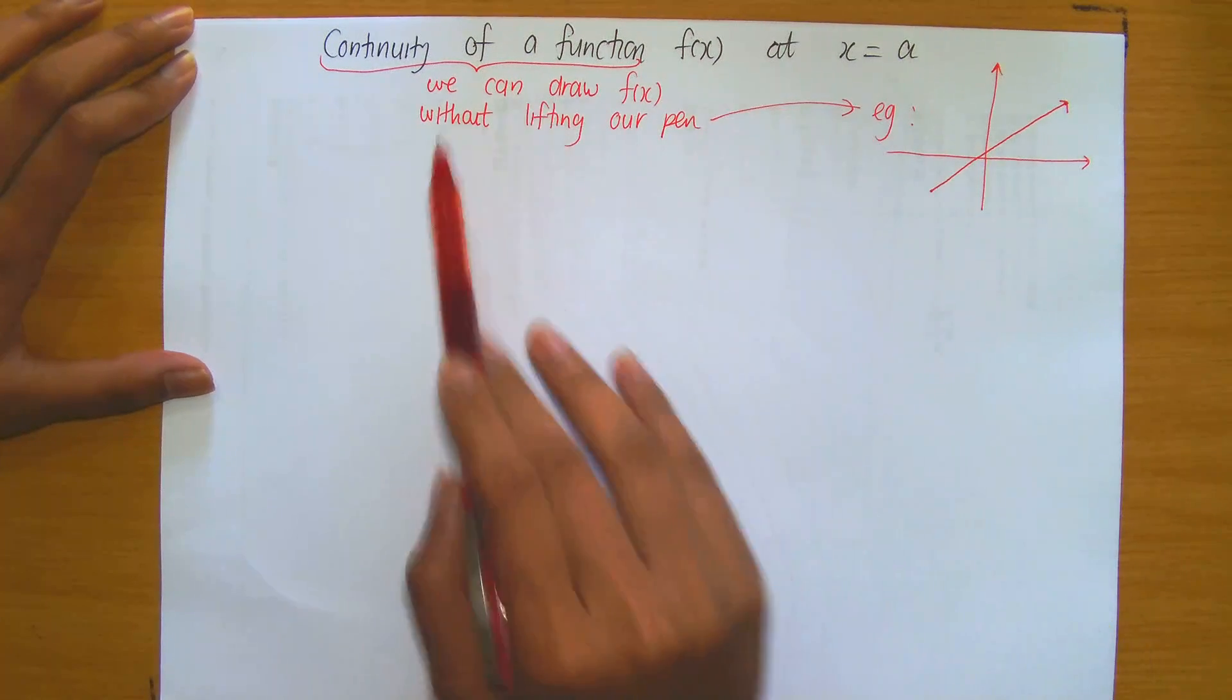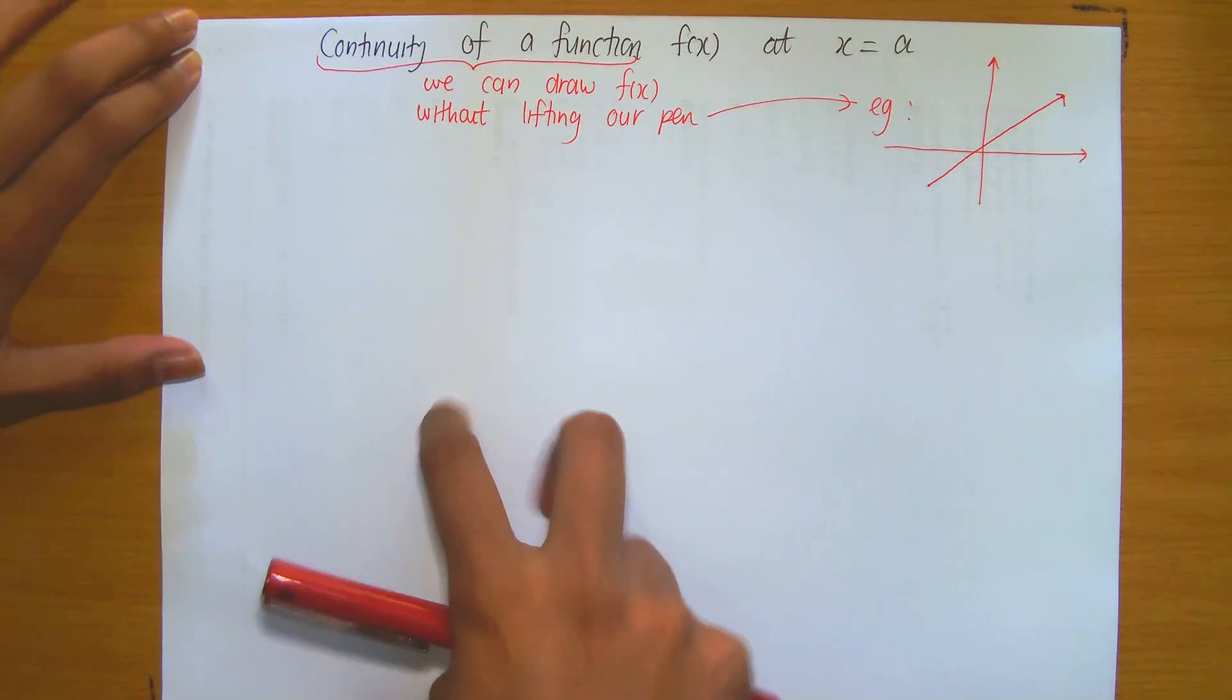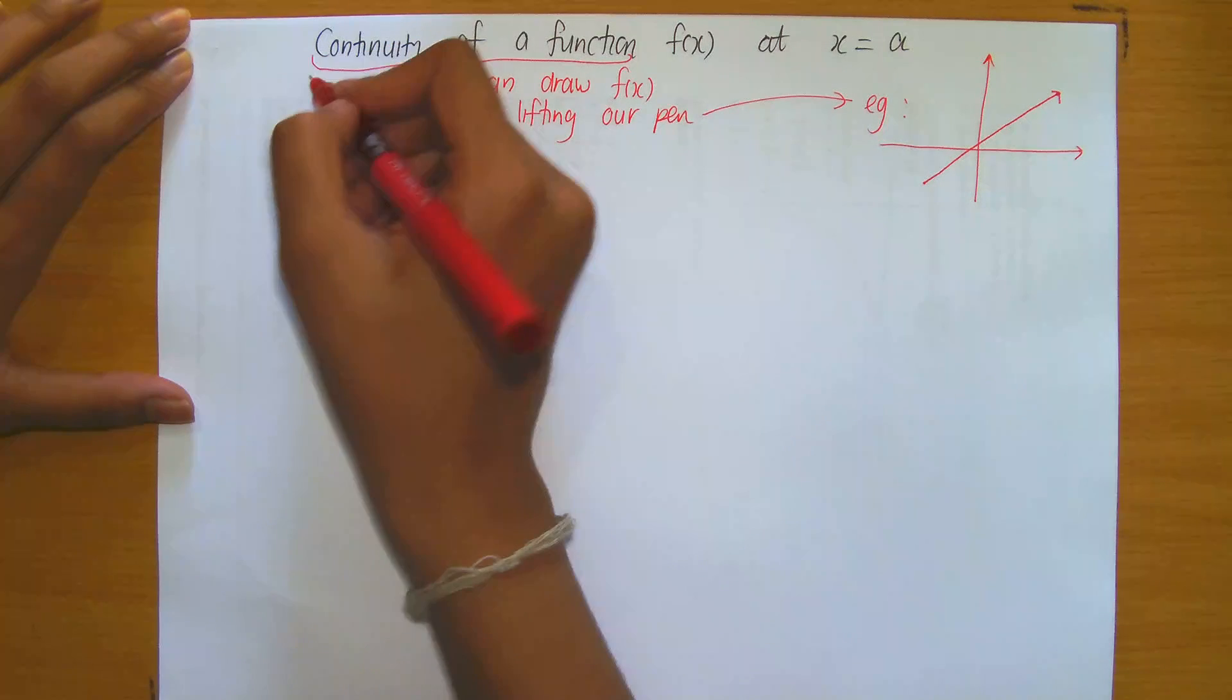Continuity of a function in layman's terms means you can draw it without lifting your pen. So algebraically now and mathematically, how do we write that?